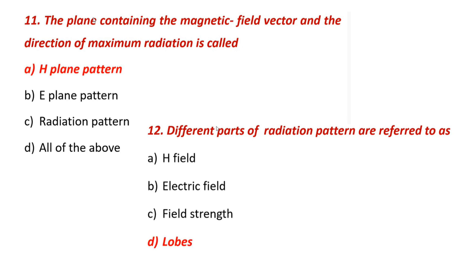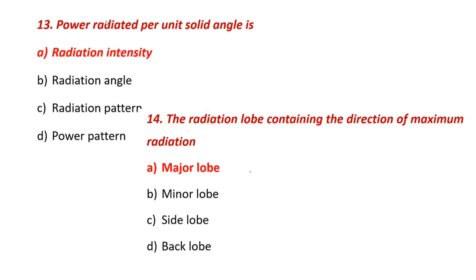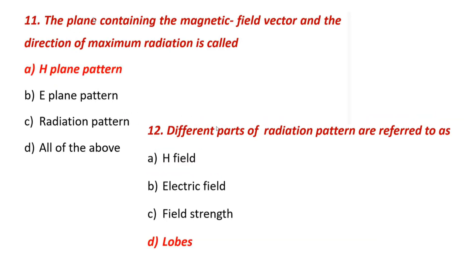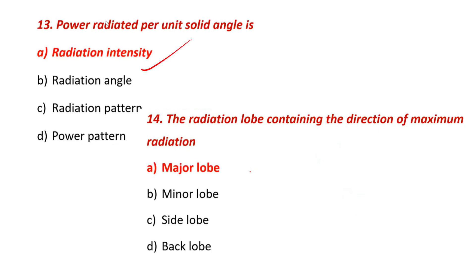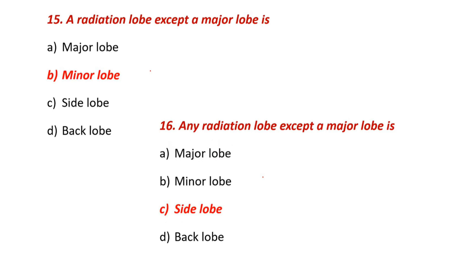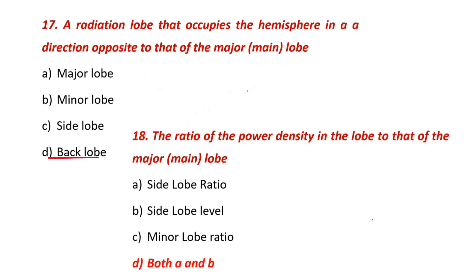Different parts of the radiation pattern are the lobes. Different lobes include the major lobe. Power radiated per unit solid angle is radiation intensity. The radiation lobe containing the direction of maximum radiation is the major lobe. A radiation lobe except the major lobe is a minor lobe or side lobe. The radiation lobe that occupies the hemisphere opposite the main lobe is the back lobe. The ratio of power density in the lobe to that of the major lobe is also defined.